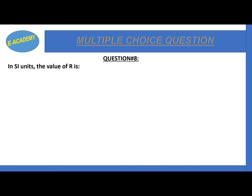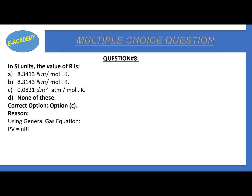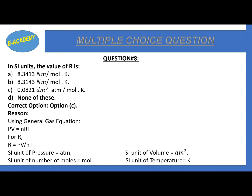Question number 8: in SI units, the value of R is 8.3413 N·m/mol·K, 0.0821 dm³·atm/mol·K, or 8.3143 N·m/mol·K? The correct option is C - 8.3143 N·m/mol·K. However, to find units of R using the general gas equation PV = nRT, R = PV/nT. Units of pressure are atm, volume is dm³, moles is mol, and temperature is Kelvin.